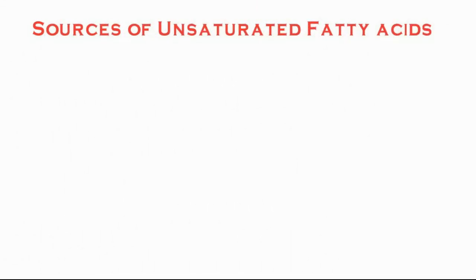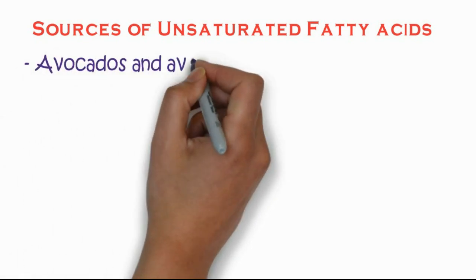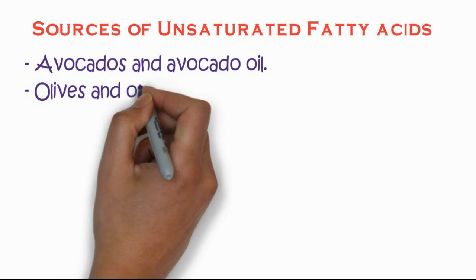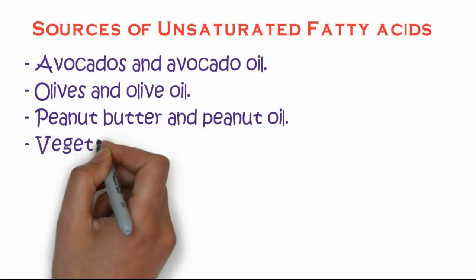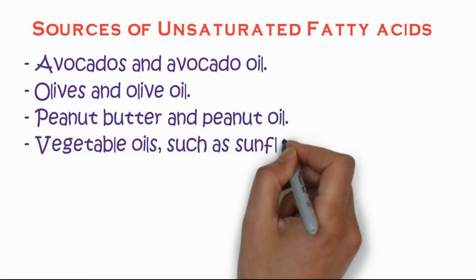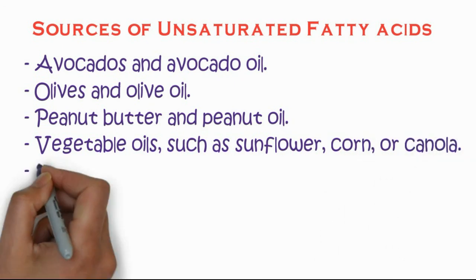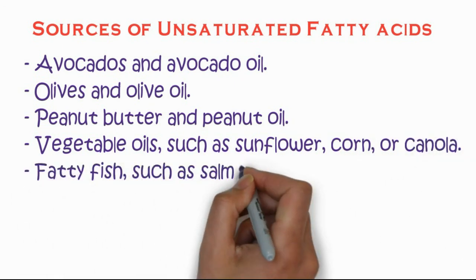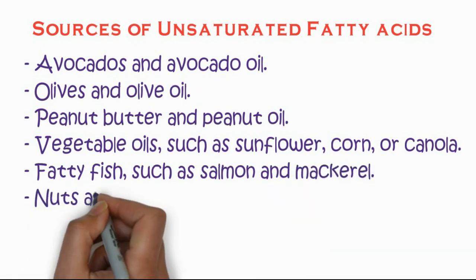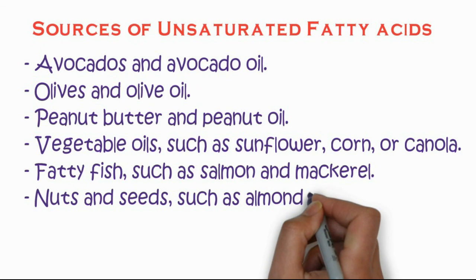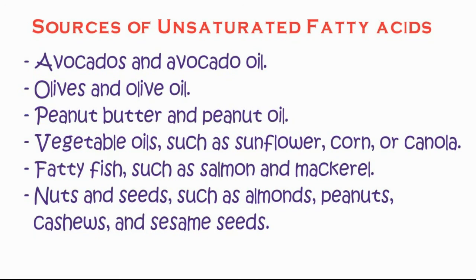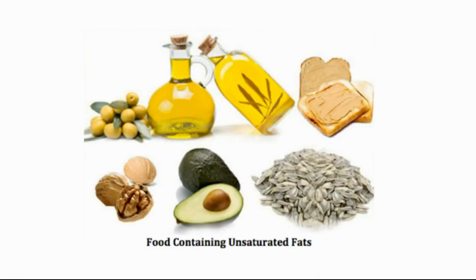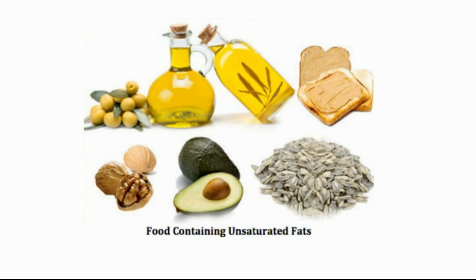Sources of unsaturated fatty acids include avocados and avocado oil, olives and olive oil, peanut butter and peanut oil, vegetable oils such as sunflower oil, corn oil, and canola oil, fatty fish such as salmon and mackerel, and nuts and seeds such as almonds, peanuts, cashews, and sesame seeds. You can see in this picture some of the foods that contain unsaturated fatty acids.